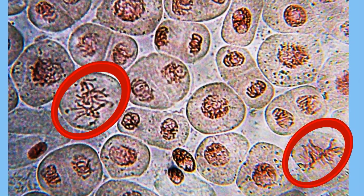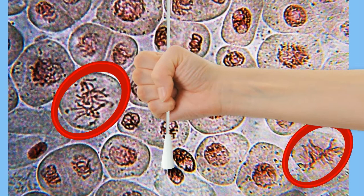During metaphase the sister chromatids align in the middle of the cell, but a couple things need to take place during prophase for this to happen.